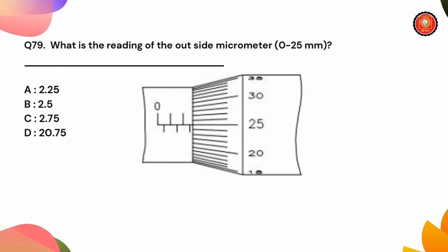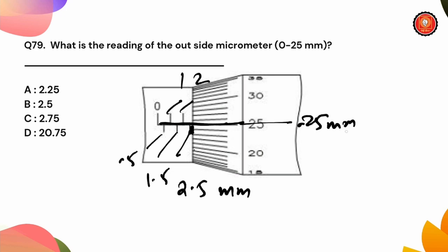Next question is what is the reading on the outside micrometer 0 to 25 mm. The marking shows 0, 0.5, 1, 1.5, 2, 2.5 mm. The next reading shows the line at 0.25 mm. So 2.5 mm plus 0.25 mm equals 2.75 mm. That is option C.